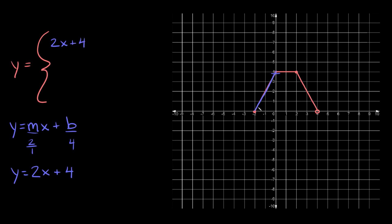Now as you can see, this line doesn't go forever in either direction. It basically just goes from x equals negative two, and then it stops where x equals zero. This is the space where this line is living — from negative two to zero.